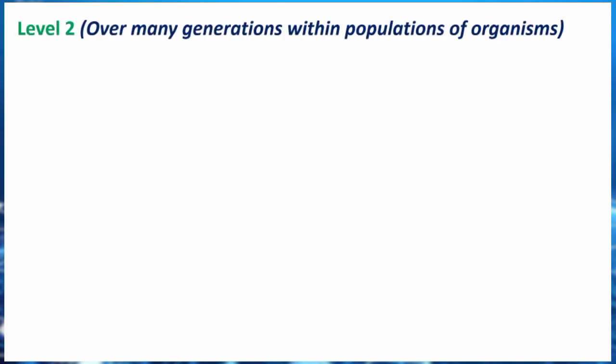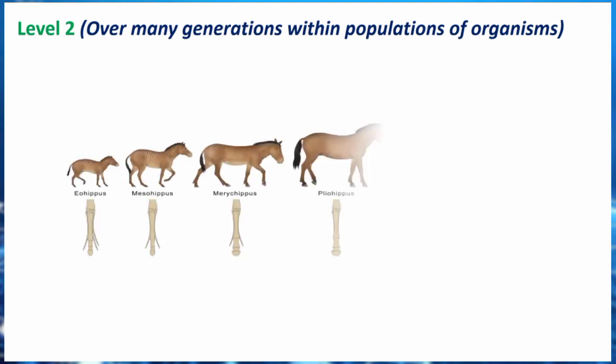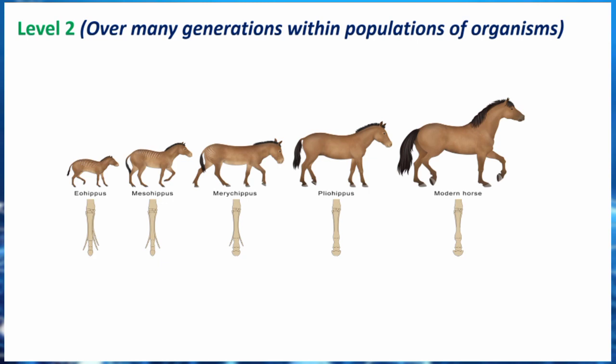The next level considers the transmission of genetic information over many generations within populations of organisms. For example, the ancient horse used to be small, but the present-day horse is far bigger. This is because genetic information was passed on over many generations, which is why there are differences between the modern-day horse and the ancient horse. We call the study of genetics under this level population and evolutionary genetics.